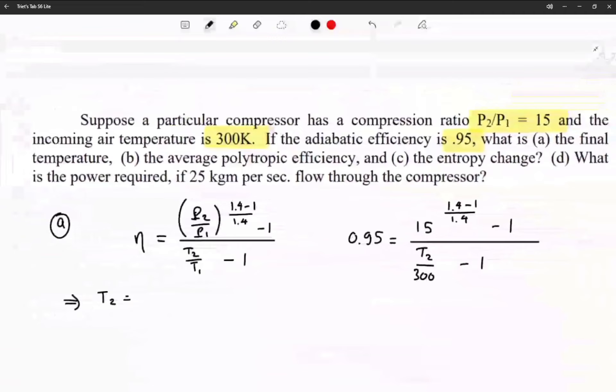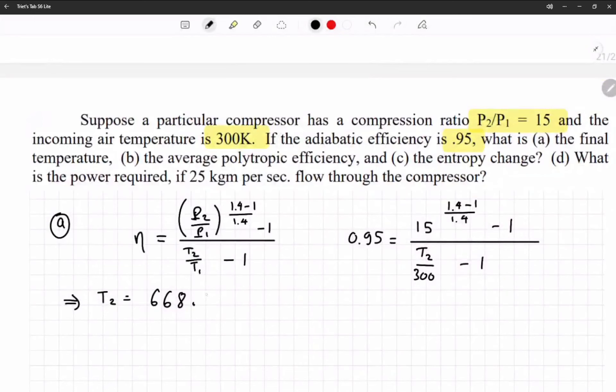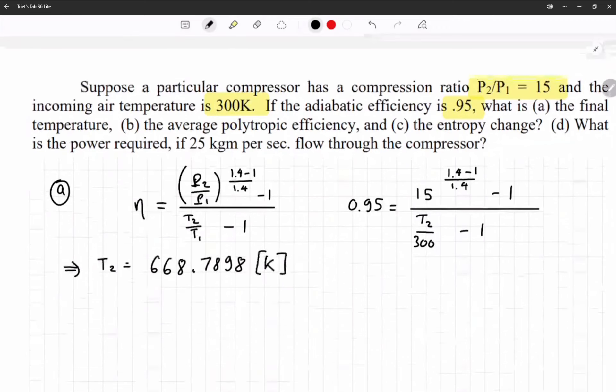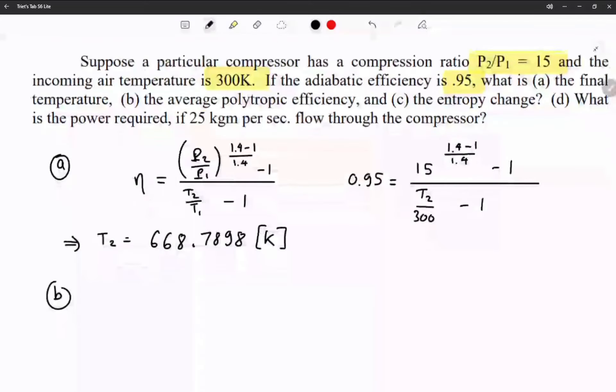And you're going to get 668.7898 Kelvin. Okay, so that's part a. Part b asks for the polytropic efficiency.